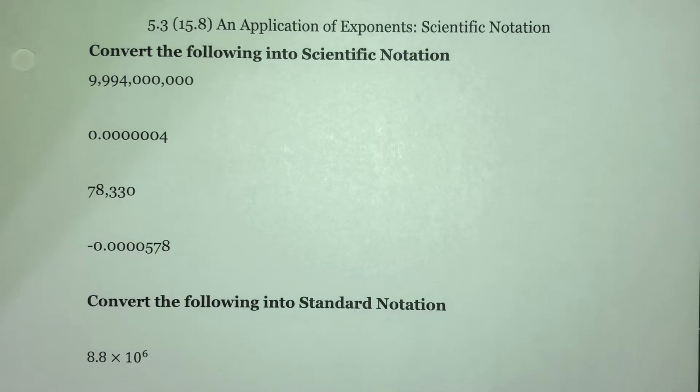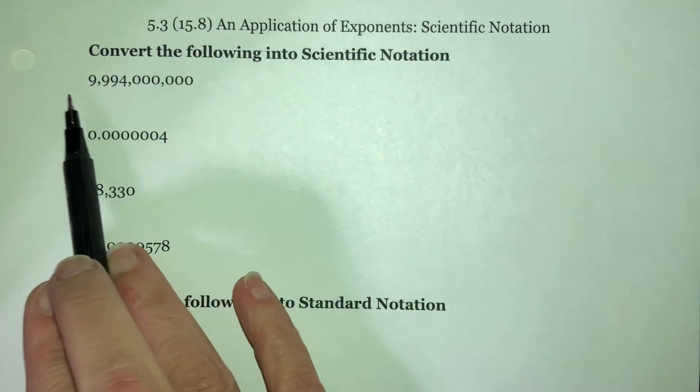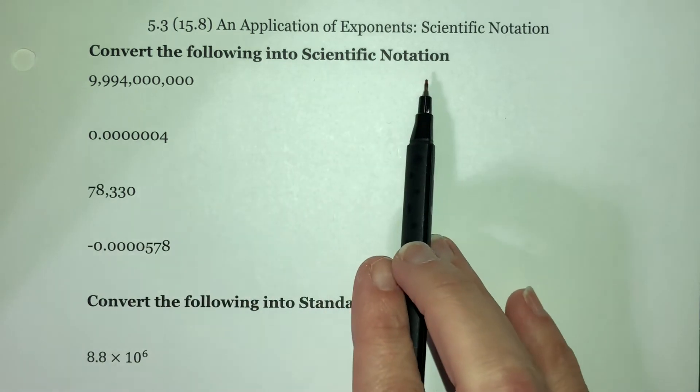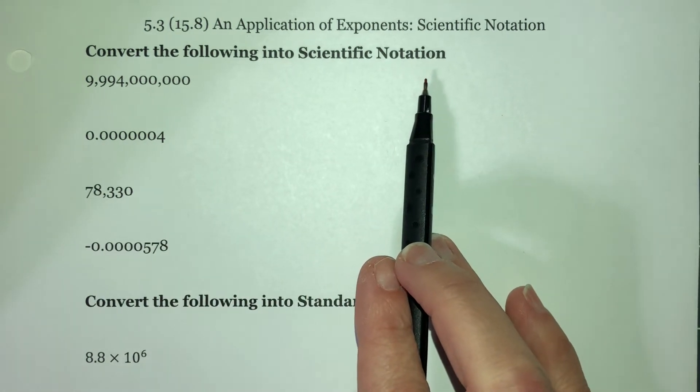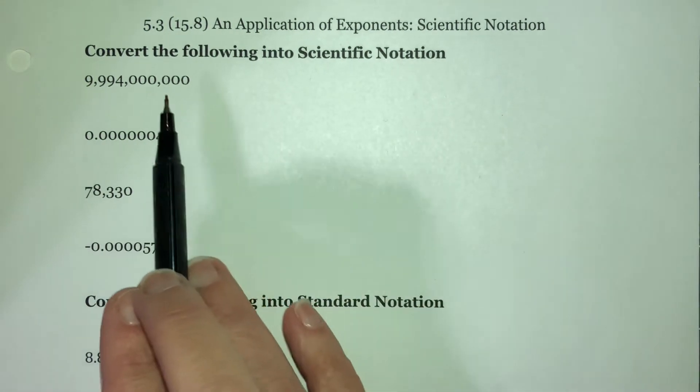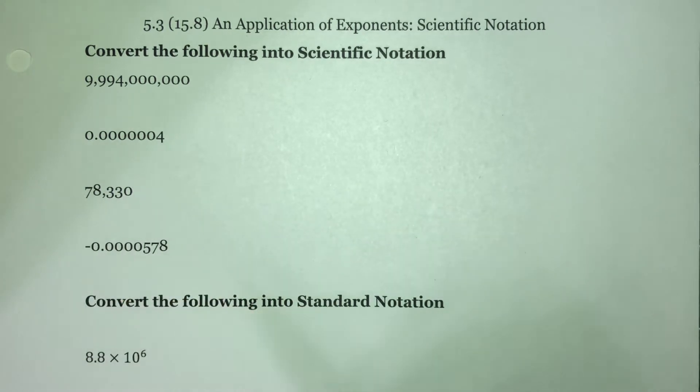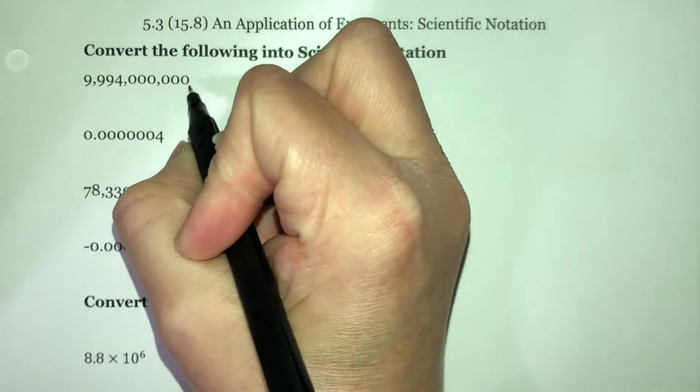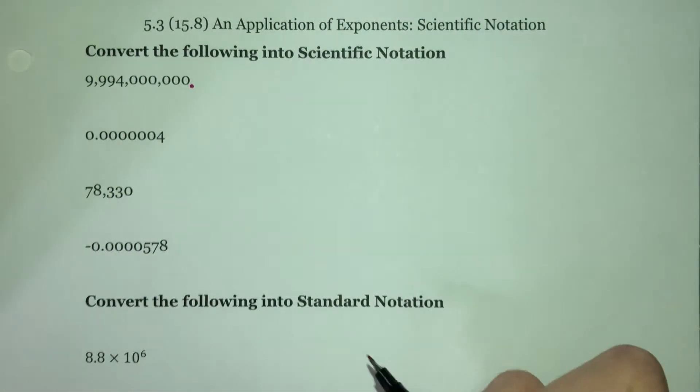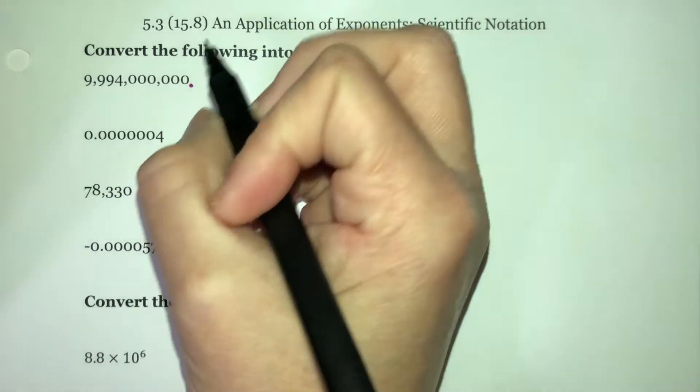What we're going to talk about now is to convert larger numbers into scientific notation. We always want to rewrite these numbers so that there is only one digit in front of the decimal point, and that digit has to be something other than zero. Now, right here, my decimal point is understood to be right there. We're going to move this decimal point all the way over between the first nine and the second nine.